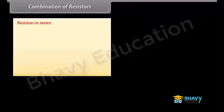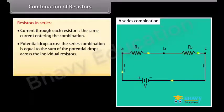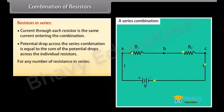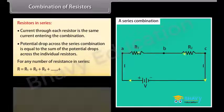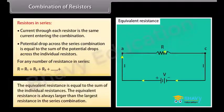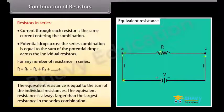Resistors in series: the current through each resistor is the same as the current entering the combination. The potential drop across the series combination equals the sum of the potential drops across individual resistors. For any number of resistances in series, R equals R1 plus R2 plus R3 and so on. The equivalent resistance is always larger than the largest resistance in the series combination.